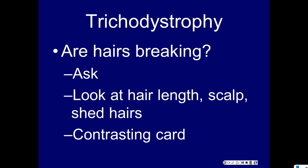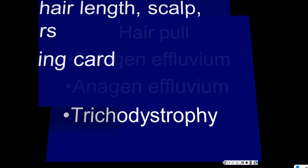The last question is whether blood work is needed. For trichodystrophy — are the hairs breaking? It's not exclusive to African-American patients but is more prevalent in that group. Patients will know if hair is coming out of the scalp or breaking. Look for differences in hair length or thinning at the scalp. It's helpful to have a contrasting card — a three-by-five card with dark paper on one side and light on the other — to make hair shaft abnormalities easy to see.